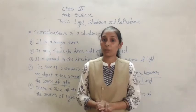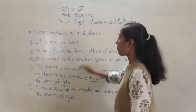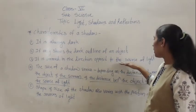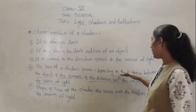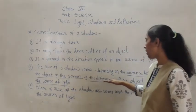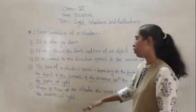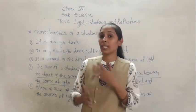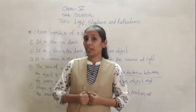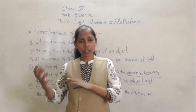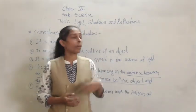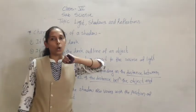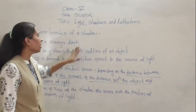So all these are the different characteristics of a shadow. To quickly revise: it is always dark; it only shows the dark outline of an object; it is formed in the direction opposite to the source of light; the size of the shadow varies depending on the distance between the object and the screen, and the distance between the object and the source of light; and the shape and size of the shadow also varies with the position of the source of light. We can use these characteristics of shadows to form different figures resembling birds and animals — as shown in the book, with the help of hand formations we can create different shadow figures of birds, plants, and other objects. This works on the phenomenon of shadow.